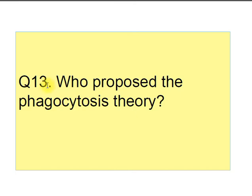Question number thirteen: who proposed the phagocytosis theory? The answer is Metchnikoff. He is also known as father of cellular immunology. He discovered the wandering cells which ingested bacteria in the larvae of starfish.